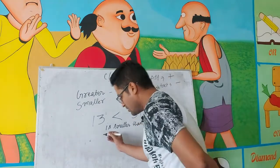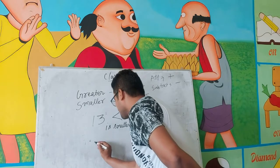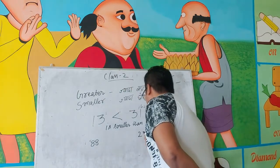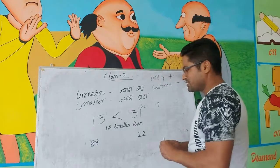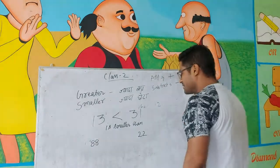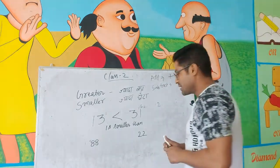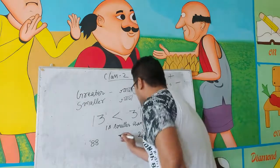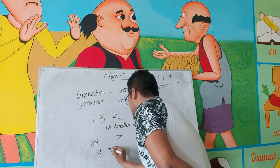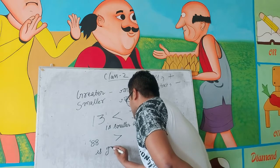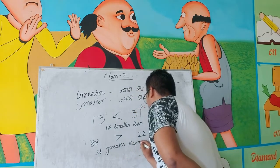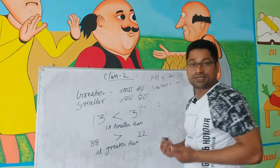उसी जगह पर अगर मान लो numbers हैं 88 और 22. तो यहाँ पर देखो — बाया वाला ज्यादा बड़ा दिख रहा है और दाया वाला छोटा दिख रहा है. तो यहाँ पर हम greater than का चिन देंगे — 88 is greater than 22.